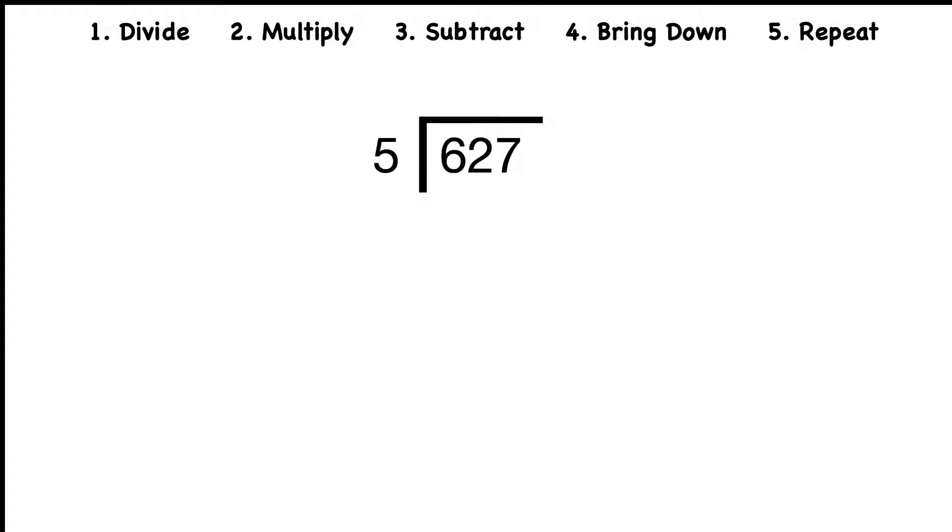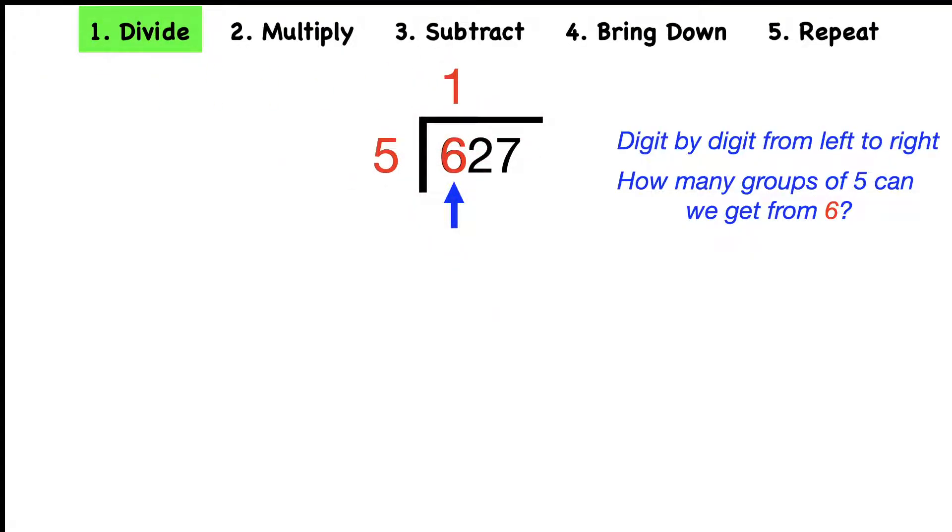How did you do? Let's start with our step to divide. Remember, we're going to go digit by digit from left to right. So how many groups of five can we get from six? And the answer to that is one. I'm not going to use models for this one. Our next step is to multiply. We're going to multiply the divisor times the quotient. In other words, five times one equals five. And that five goes underneath the six.